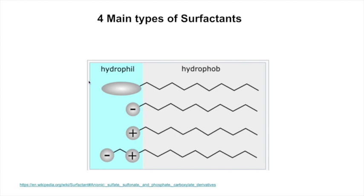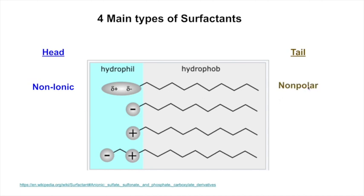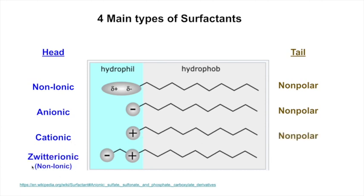Surfactants are usually talked about in three different ways with the hydrophilic end — the charged end — and the hydrophobic end. The head can be non-ionic with partial charges like an alcohol with delta plus on hydrogen and delta minus on oxygen, and then it has a non-polar tail. Or the head can be anionic with a negative charge and a non-polar tail. Or the head can be cationic, or it can be zwitterionic — meaning overall neutral with full charges but a non-polar tail.